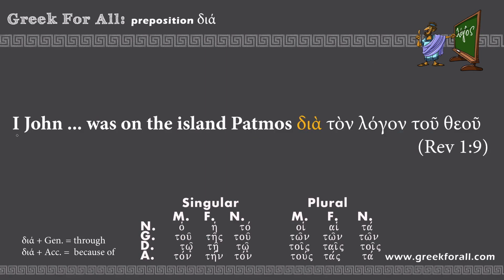Revelation 1:9 — 'I, John, was on the island Patmos dia ton logon tou Theou.' Here we have dia followed by 'ton logon.' We check the endings and find them in the accusative case — 'logon' is a masculine word. So dia plus accusative means 'because of,' giving us 'because of the word of God.' Together: 'I, John, was on the island Patmos because of the word of God.'